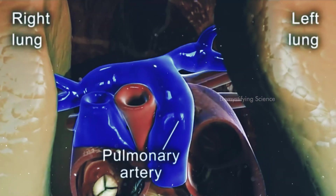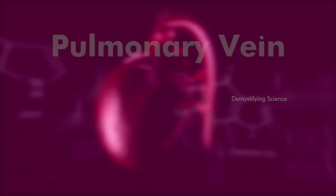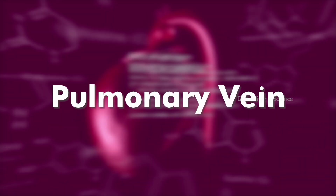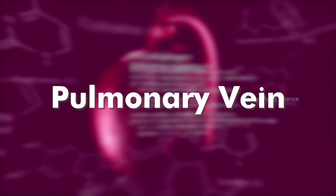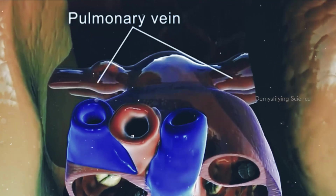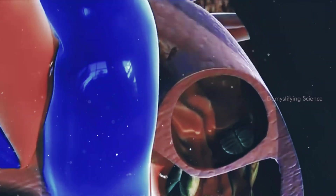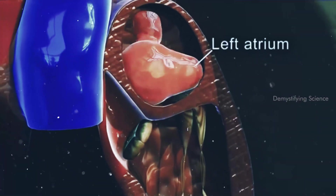Number 3: Pulmonary artery. The pulmonary artery carries deoxygenated blood away from the right ventricle to the lungs. Number 4: Pulmonary vein. The pulmonary vein returns oxygenated blood from the lungs to the heart.